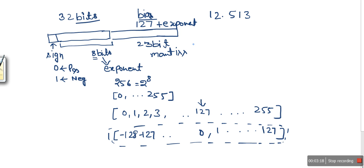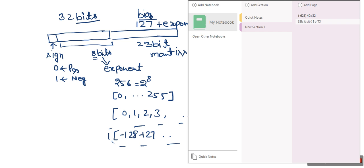So now what we are going to do is calculate the binary according to IEEE 754 standard for this number 12.513. First of all, let's convert this number into binary.